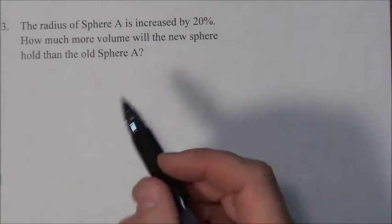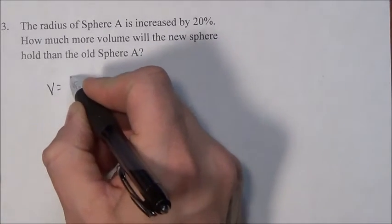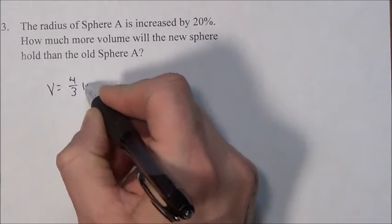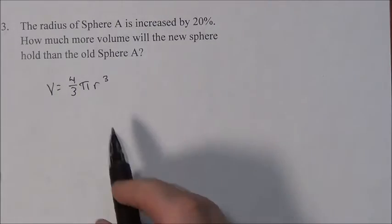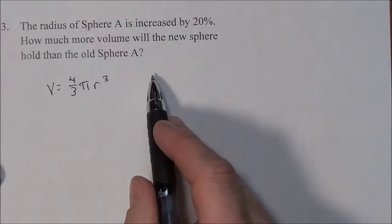So we're going to increase it by 20%. Now talking volume. Volume is 4 thirds pi r cubed, so we're probably going to be cubing whatever number we have here.